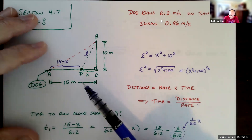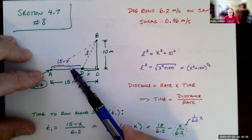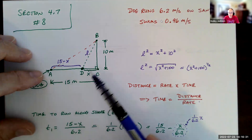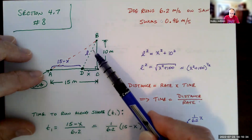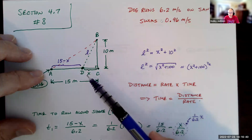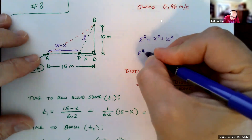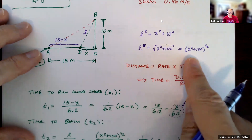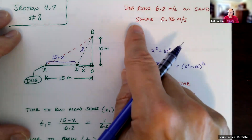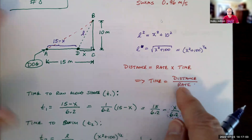We're going to set this up. The green information is given. Since X is the distance from D to C, the distance from A to D is 15 minus X meters — it's 15 meters total, so 15 minus X remains. If the dog goes to point D and swims out to point B, we call that length L. By the Pythagorean theorem, L squared equals X squared plus 10 squared, so L equals the square root of X squared plus 100, or (X² + 100)^(1/2). So we have the distances the dog will travel, and we know the rates. Remember, distance equals rate times time, so time equals distance divided by rate.